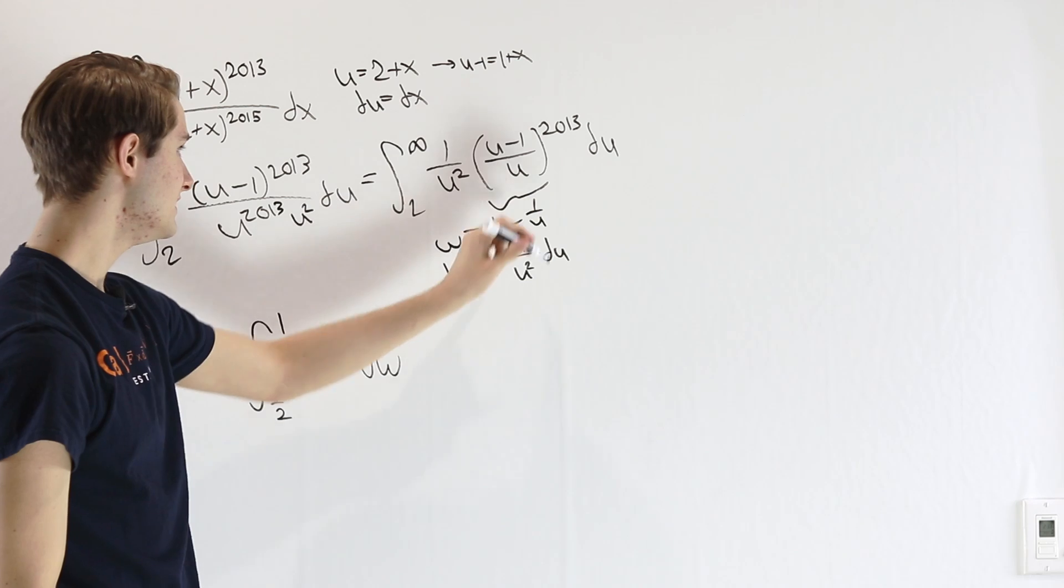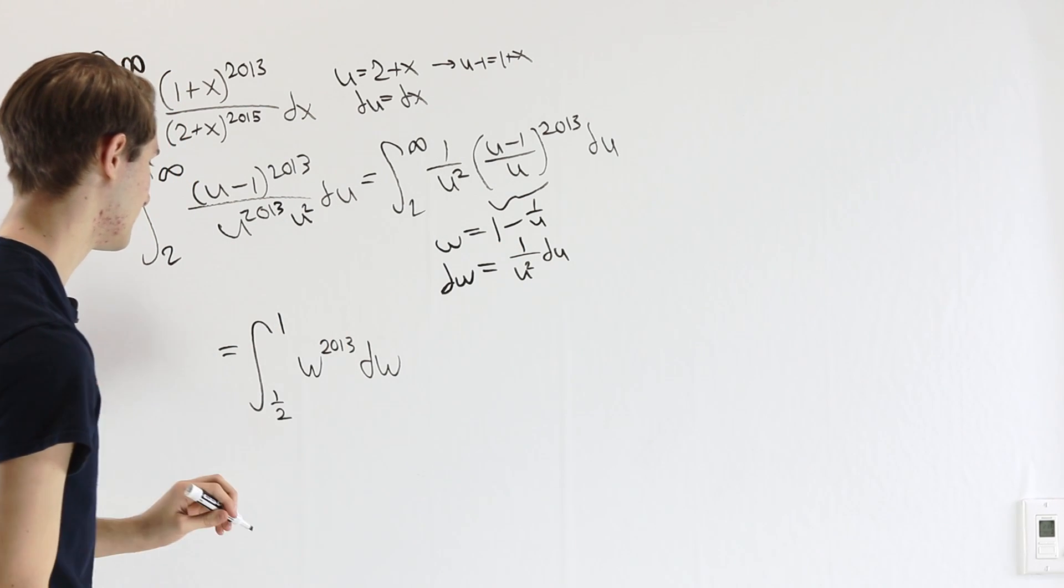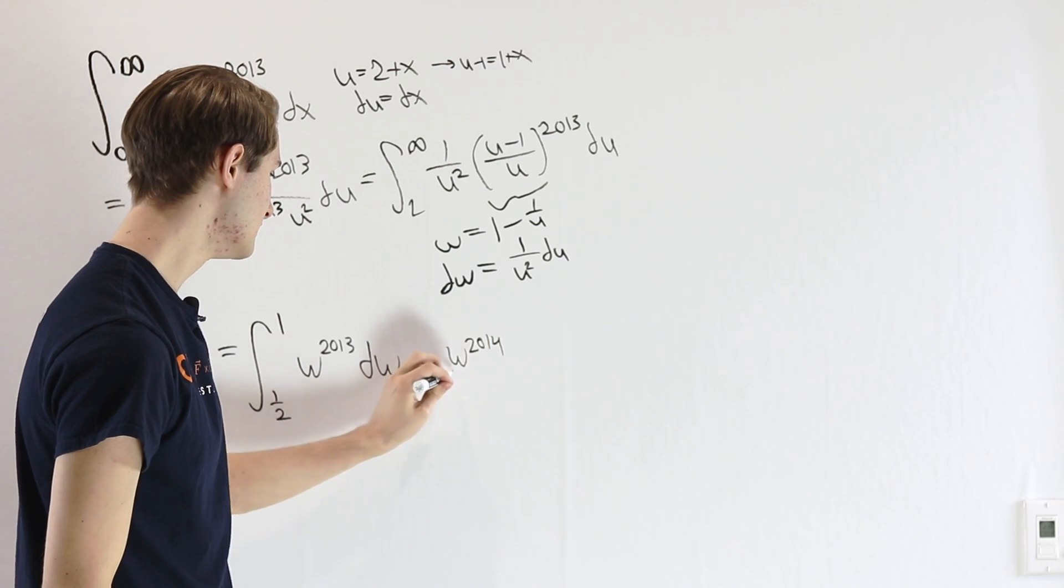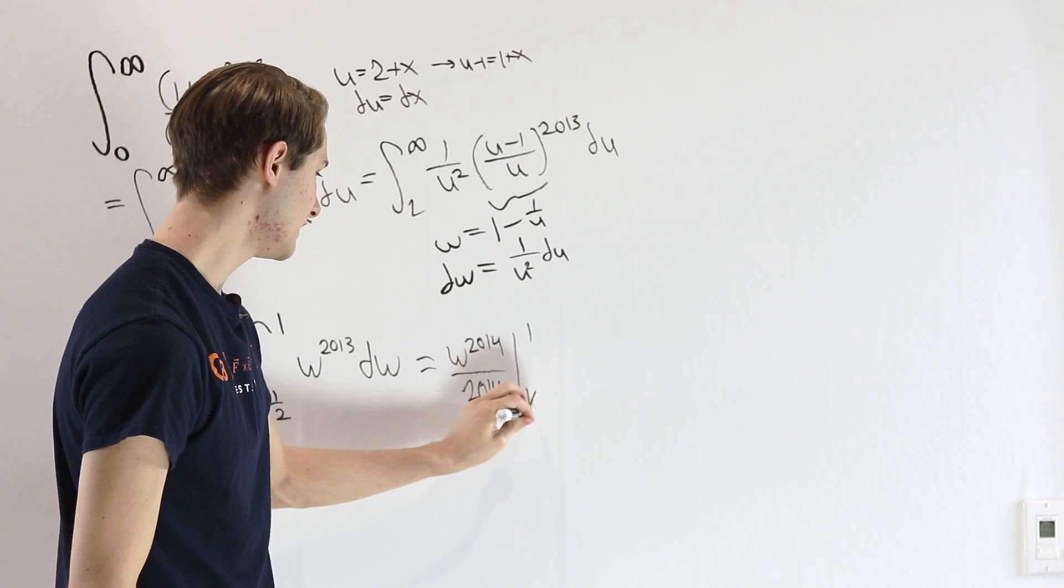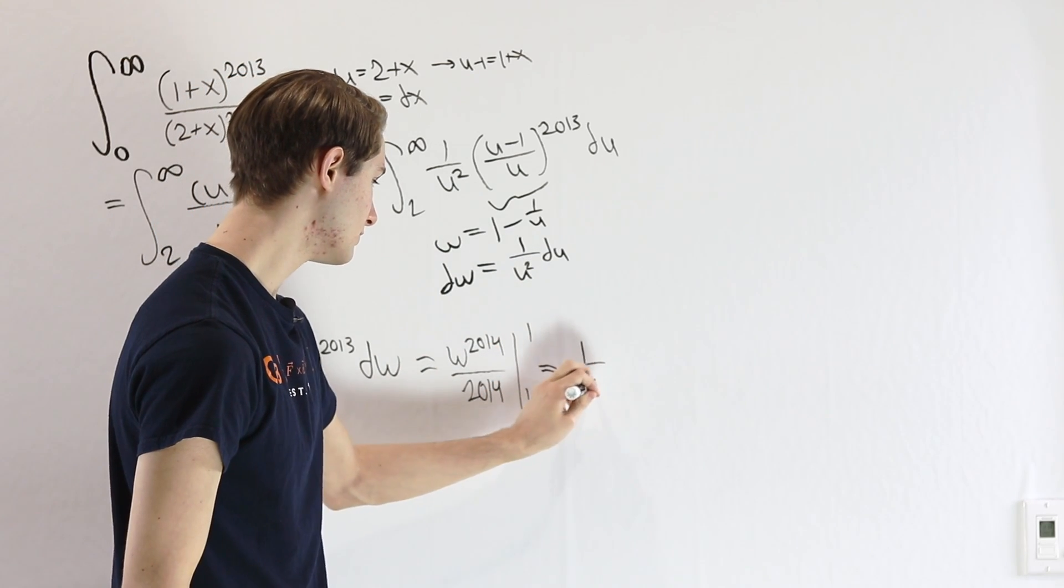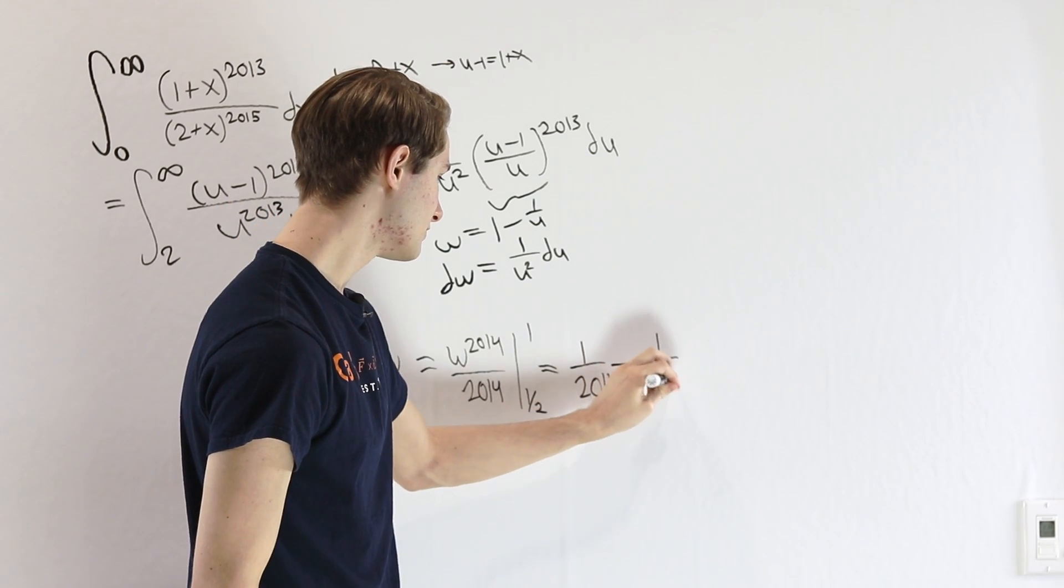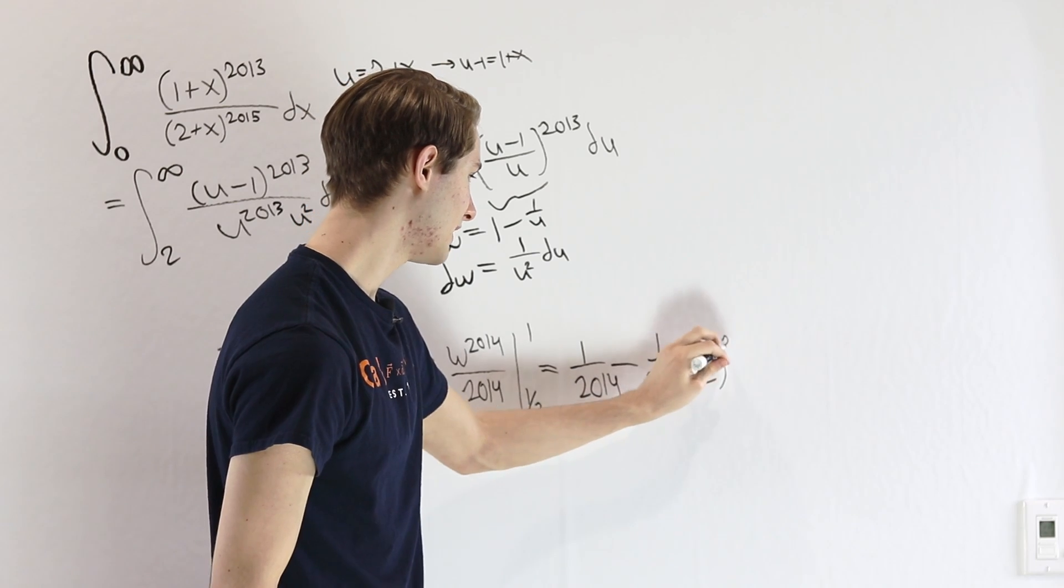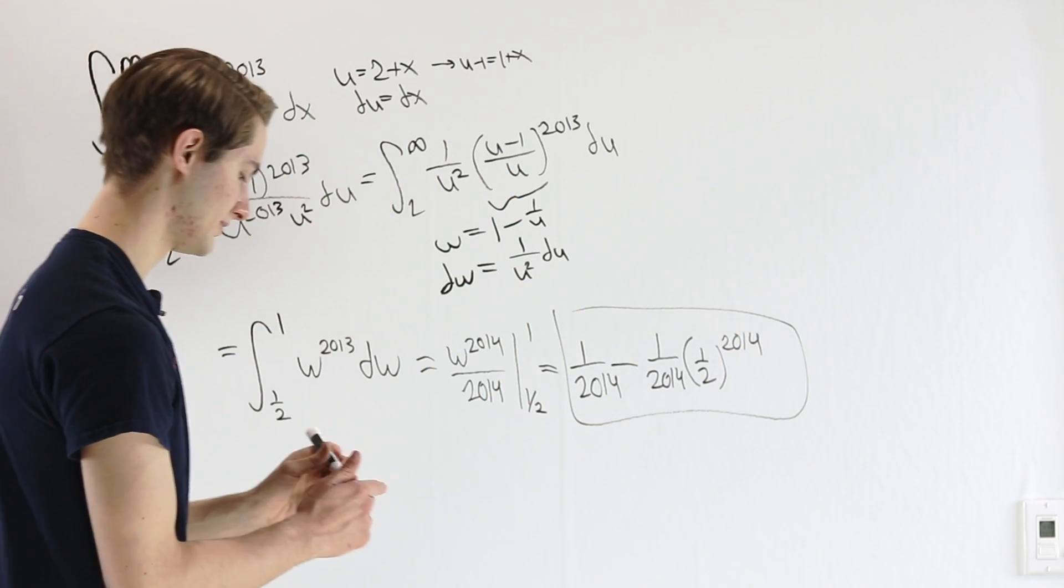And then this inside is w^2013. From here, we get w^2014 over 2014, evaluated at 1 and 1/2. 1 to the 2014 power is just 1, so we have 1/2014 minus 1/2014 times (1/2)^2014. And that's our final answer.